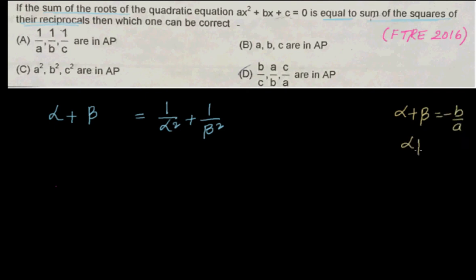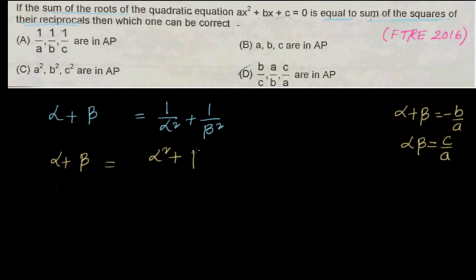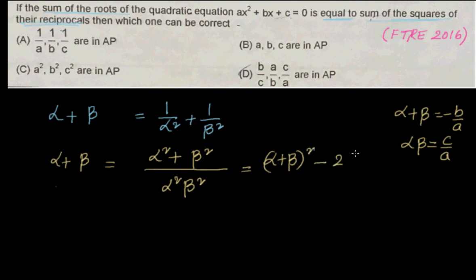We don't directly know 1/α² + 1/β², so let's convert it. We can write: α + β = (α² + β²)/(α²β²), which equals [(α + β)² − 2αβ] / (αβ)².